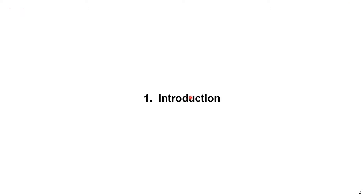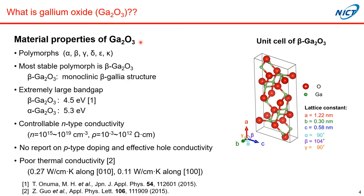So, introduction. You may know this very well, but first I'd like to introduce basic material properties of gallium oxide. Gallium oxide has several types of polymorphs from alpha to kappa. Among them, beta is the most stable phase, corresponding to monoclinic beta-gallium oxide structure, as shown here. All the other polymorphs are metastable phases. Gallium oxide has two strong points and two drawbacks.